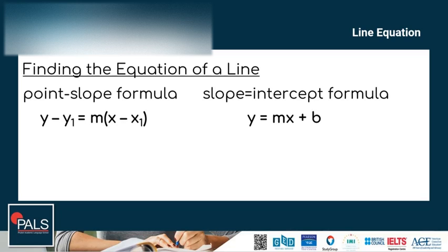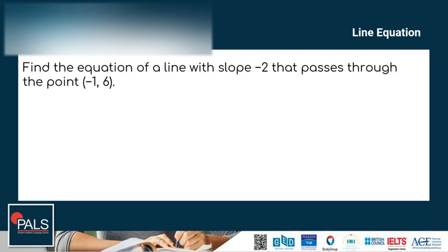Let's try answering an example. Find the equation of a line with slope negative 2 that passes through the point negative 1 and 6. The given is a slope and a point, so to solve this kind of problem, we can use the point-slope formula.